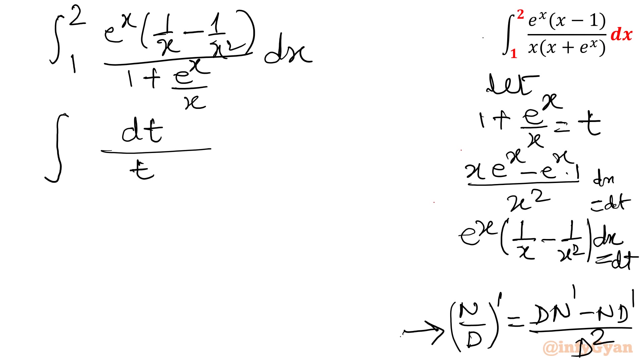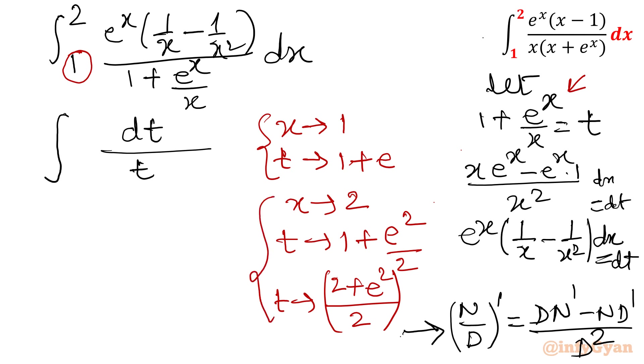Now replace your limits because we have substituted something. So when x tending to 1, what will be the value of t? So t will tend to, put here x is equal to 1. So 1 plus e raised to the power 1 over 1, so 1 plus e. And when this is for 1 lower limit, this part is done. When x tending to 2, t will be 1 plus e to power 2 over 2, over 2. If you want to take LCM, then 2 plus e square over 2 completely. This is how you can write. This is for upper limit. So let me put that value: t will be 1 plus e, and upper limit will be 2 plus e square over 2.